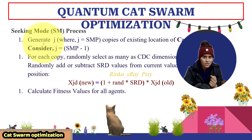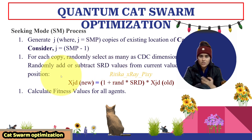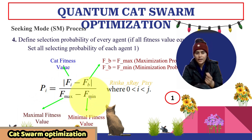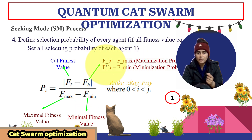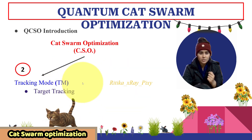Here you can see the steps involved in seeking mode. First, we will generate J copies — where J is SMP — of the existing location for the cats. For each copy, we will randomly select CDC dimensions, then add or subtract SRD values, and calculate the fitness value. Then we will define the selection probability. Here FMax is the maximal fitness value and FMin is the minimal fitness value. For a maximization problem, FV is considered FMax; for a minimization problem, FV is considered FMin.